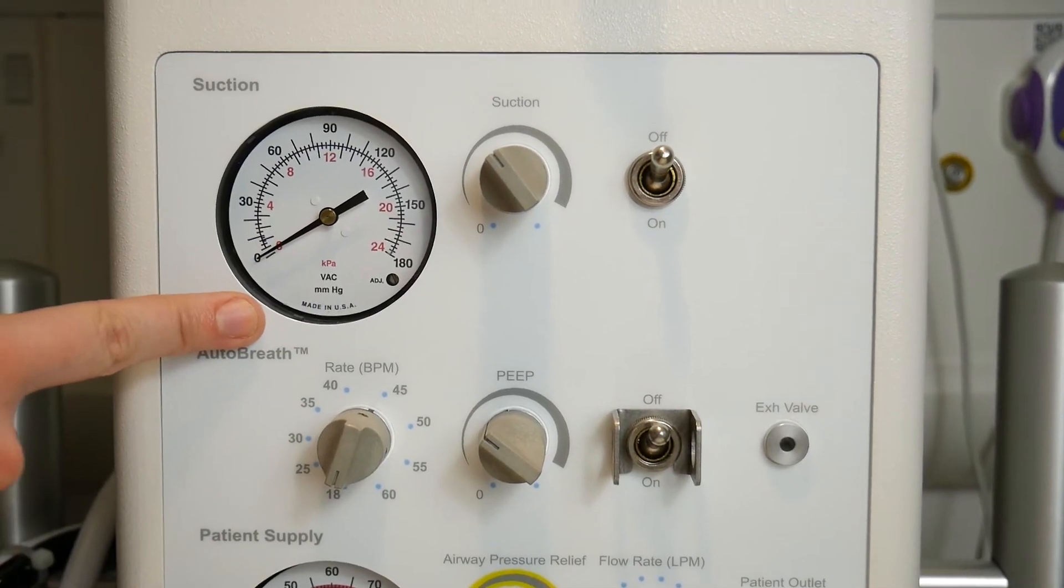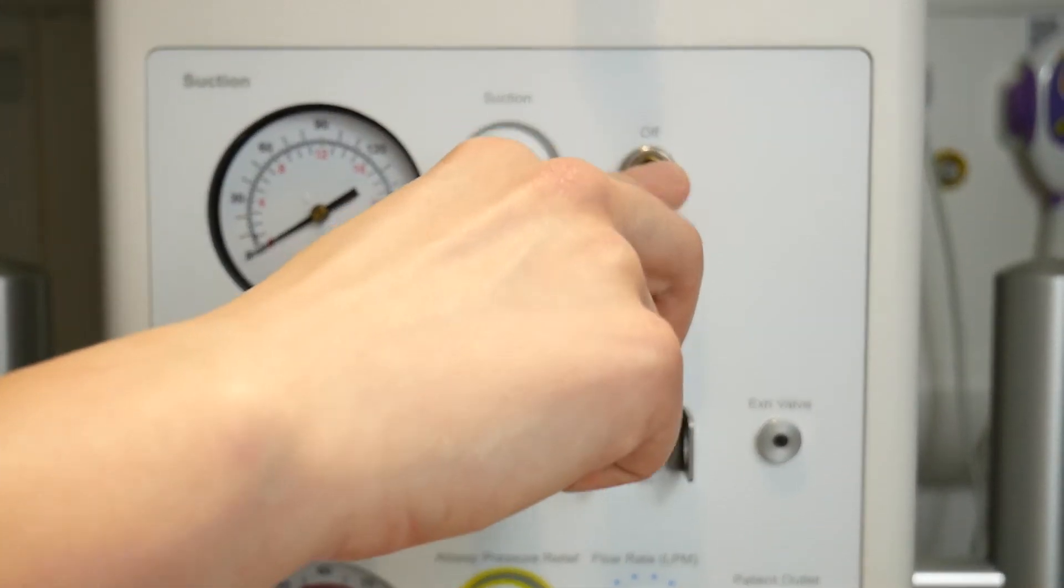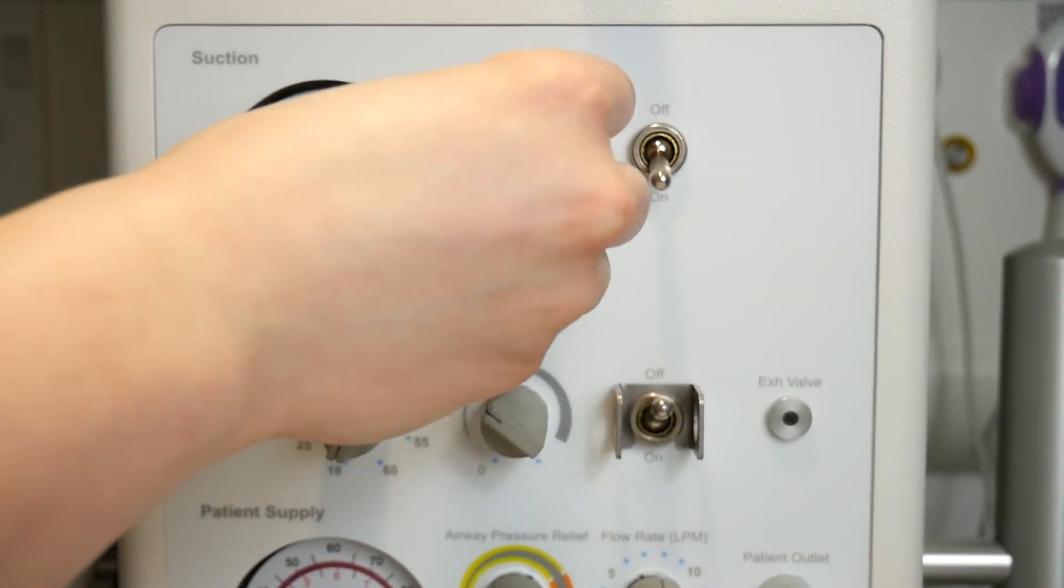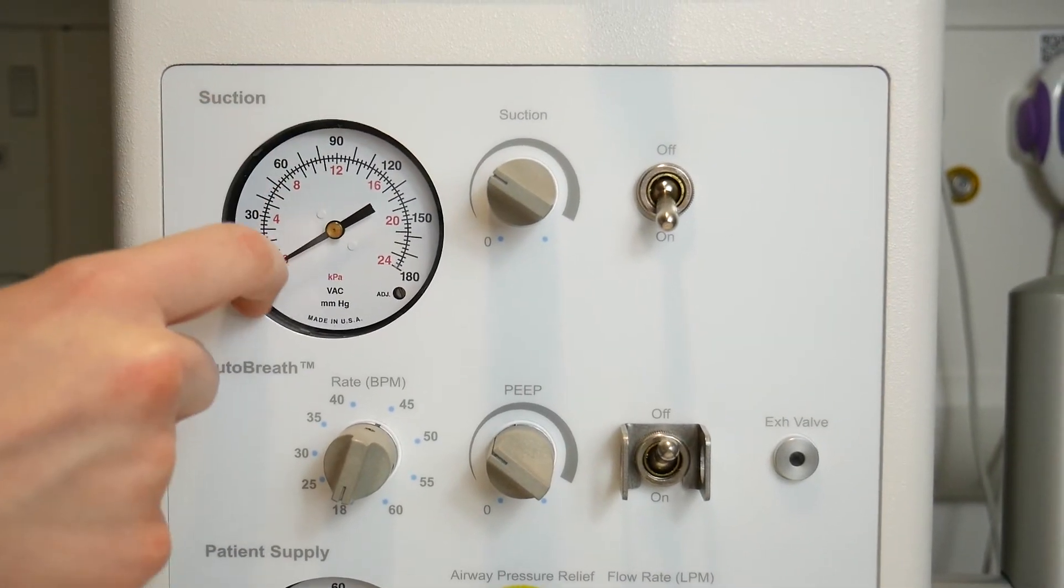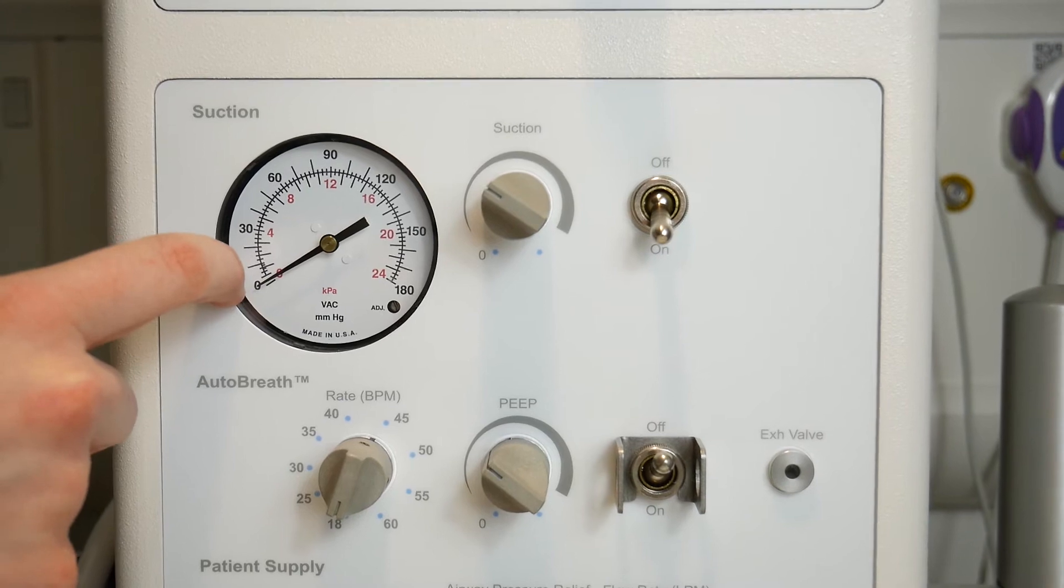This row corresponds to the suction. You turn it on using this switch and then increase the pressure by turning this dial. When you occlude the suction device, this needle will move to show how much negative pressure is exerted.